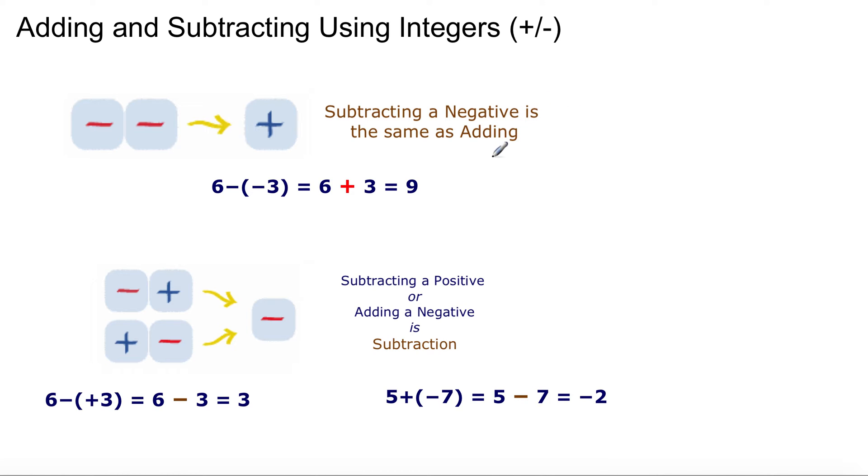Subtracting a negative is the same as adding. So when you have 6 minus negative 3, it's exactly the same way of saying 6 plus 3. So 6 minus negative 3 will equal 6 plus 3, is 6 plus 3, and we'll give you 9. So these basically cancel each other out, and it's the same as saying I'm adding it. Subtracting a negative number is like adding.